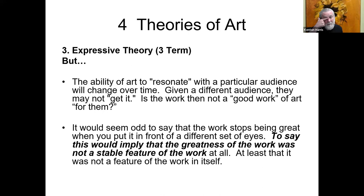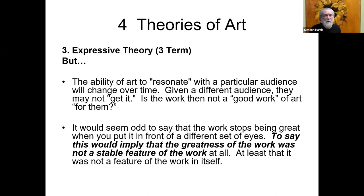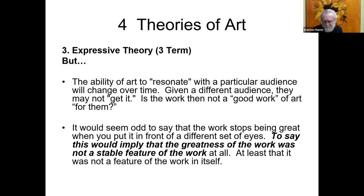But the ability of art to resonate with a particular audience might change over time, and given a different audience, they may not get it. The work powerfully received by one audience may not generate the same response generations later or a continent away. So there does seem to be an unreliability about what constitutes a great work of art, since its ability to elicit strong emotional responses may shift from audience to audience. It would seem odd to say that works of art stop being great when you put them in front of a different set of eyes — this would imply the greatness of the work was not a stable feature of the work at all.